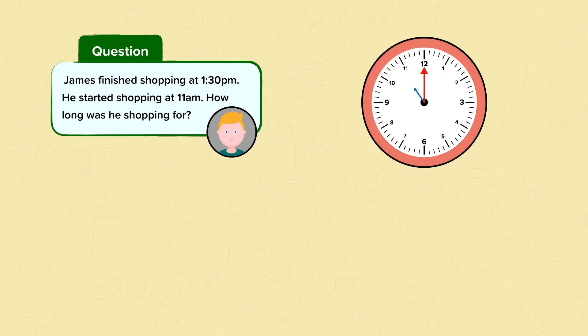This time on our number line we're going to have to count in minutes and hours. We start at the start time which is 11 o'clock and the end time which is 1:30 or half past 1. We count on one hour to 12 o'clock, another hour to 1 o'clock, and then 30 minutes to 1:30.